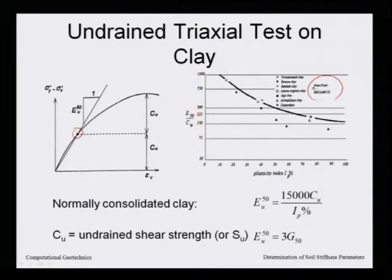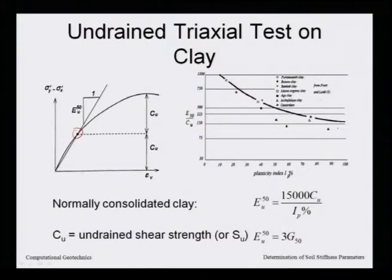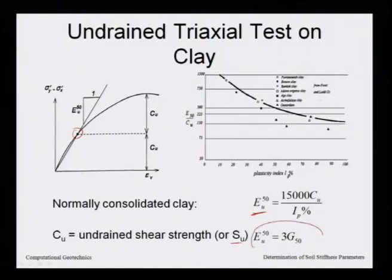This empirical correlation has been given for different clays. For normally consolidated clay, EU at 50 percent stress is: EU50 = 15,000 * Cu / IP, where Cu is undrained shear strength. From this, EU50 = 3*G50, where G is the shear modulus at 50 percent.